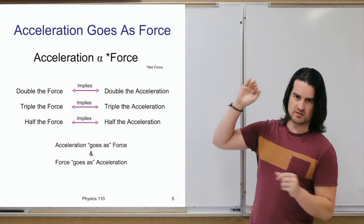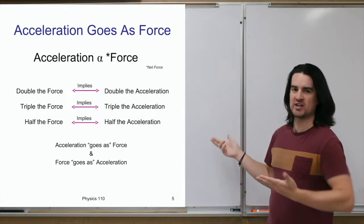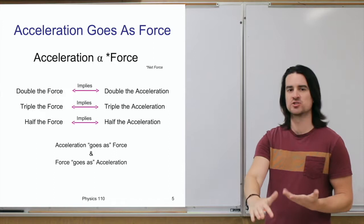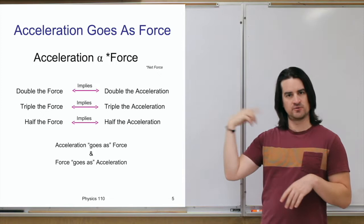Acceleration is proportional to the net force — all the forces together acting as one equivalent force. If you double the force applied to an object, you double the acceleration. Triple it, you triple the acceleration. Apply half the force and you get only half the acceleration. The arrows go both ways: if an object's acceleration is doubled, you can infer the force on that object is doubled.